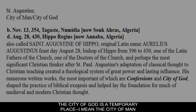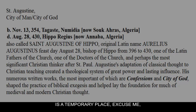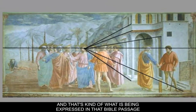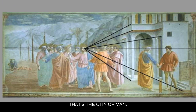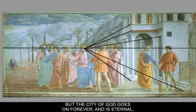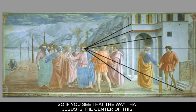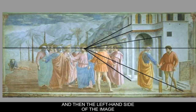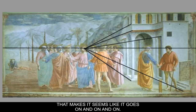The City of Man is a temporary place — that's represented by the architecture on the right-hand side of the painting. Where you pay taxes is the City of Man; we live in the world of man right now. It's temporary, temporal, not divine, not eternal. But the City of God goes on forever and is eternal — like the planet and the mountains that stretch on and on, and God will provide. So Jesus bisects the painting: on the right is the architecture where taxes are paid, and on the left is Peter down by the water, with the mountains representing eternity — even using atmospheric perspective to make it seem like it goes on forever.